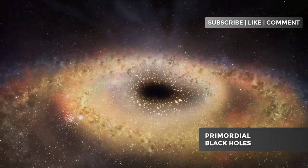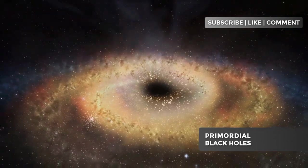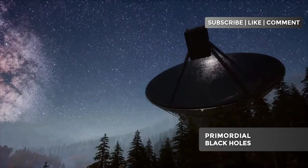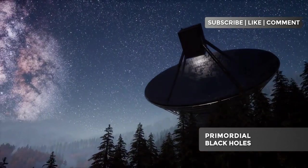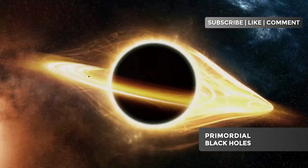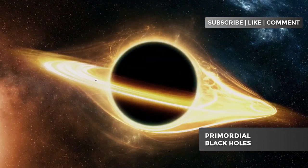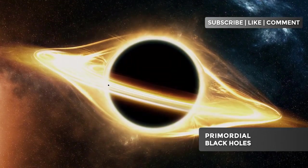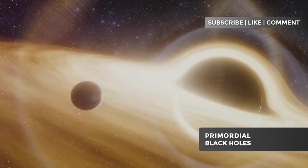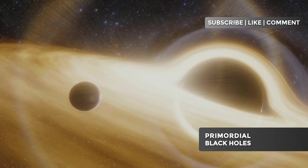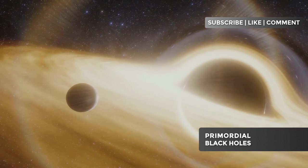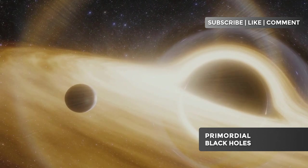On the other hand, the largest could have served as seeds for the supermassive black holes we find at the center of galaxies. This diversity of scales offers astronomers a variety of potential targets for observation. While larger black holes could be detected by their gravitational effects on nearby stars, smaller ones could be revealed through gravitational micro-lensing events, where the light from distant stars is momentarily amplified by the passage of a massive object between us and the star.